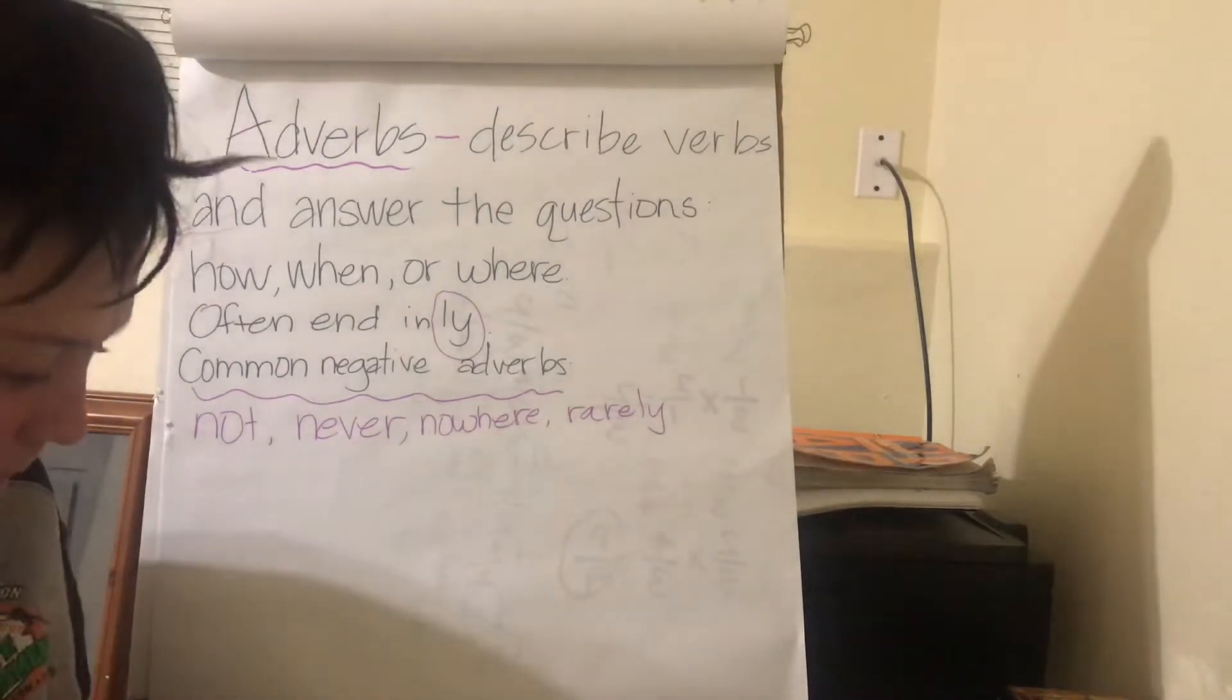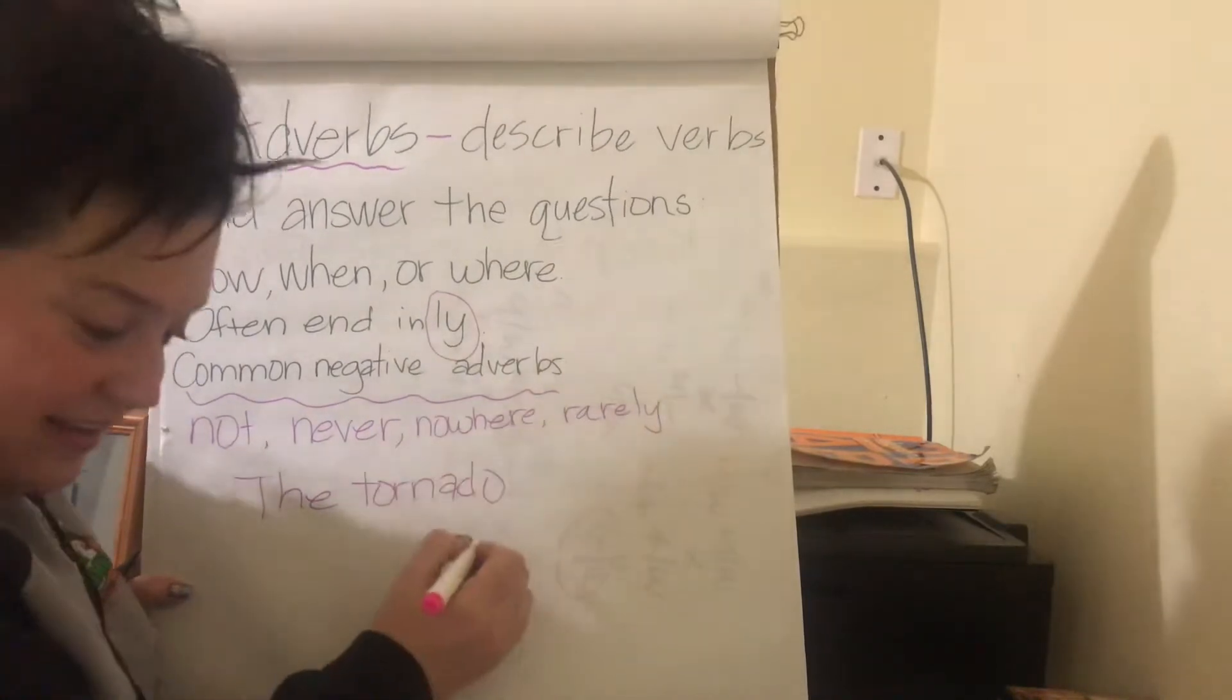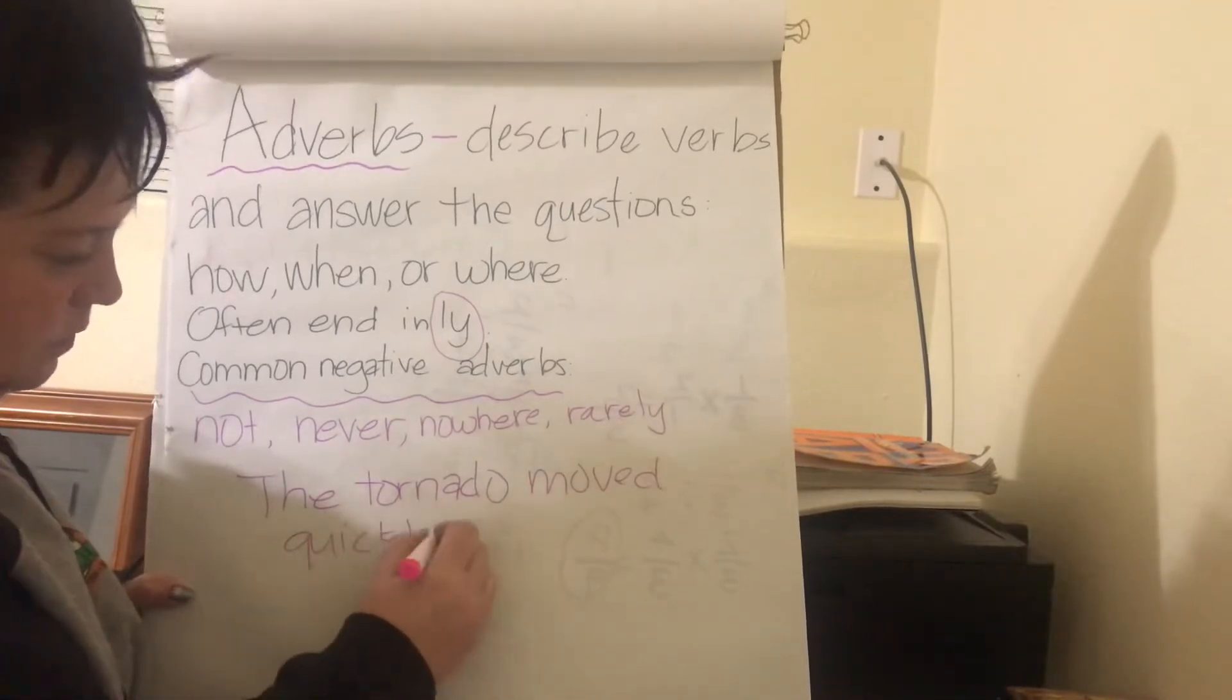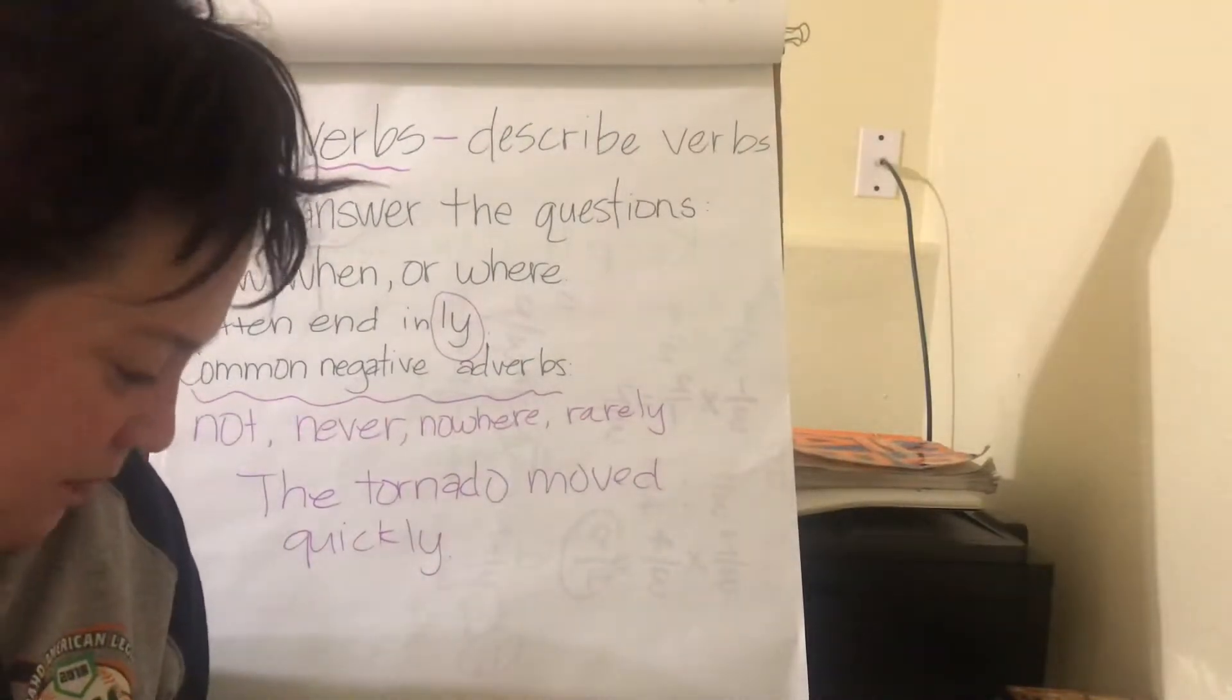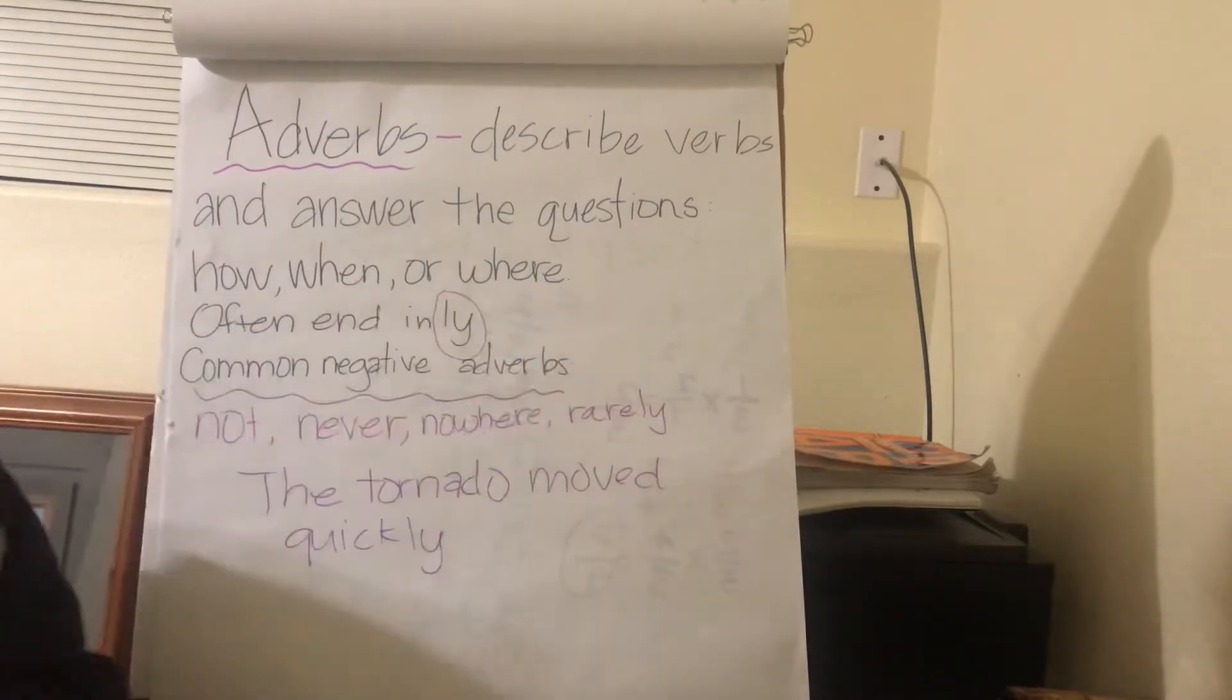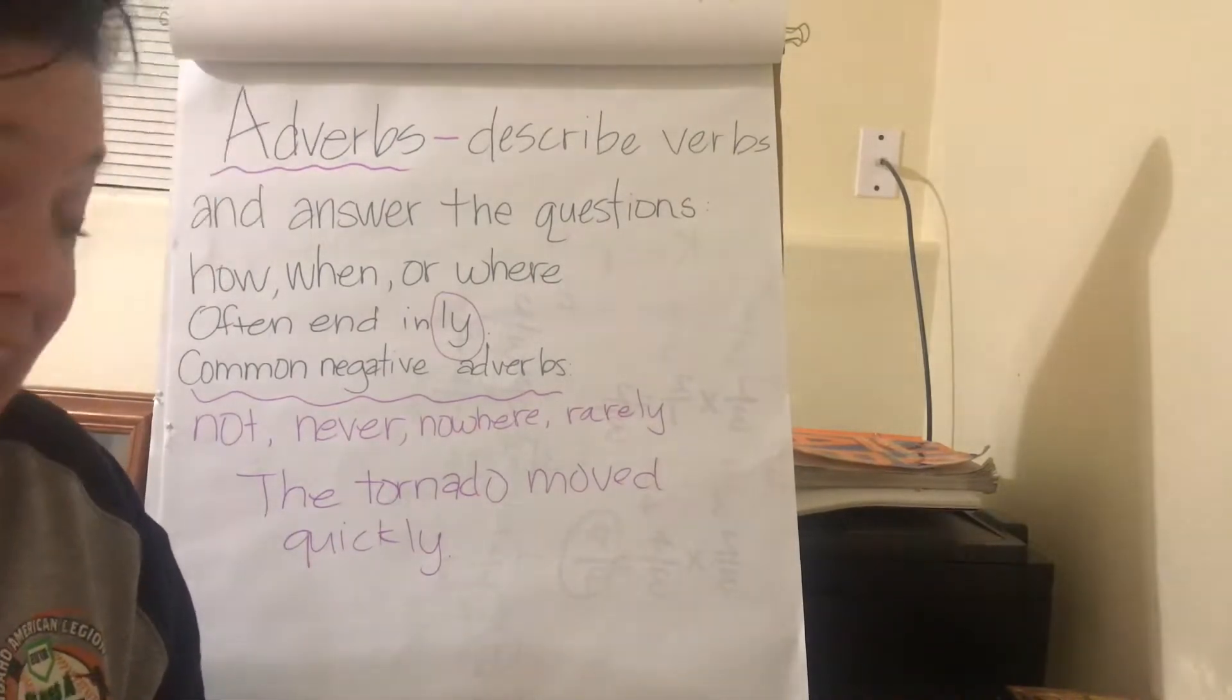Our sentence is: the tornado moved quickly. What is the sentence? The tornado moved quickly. The adverb is helping us to tell us how it moved, when it moved, or where it moved. How is it moving? Quickly, good.